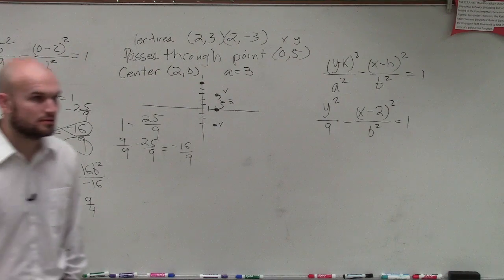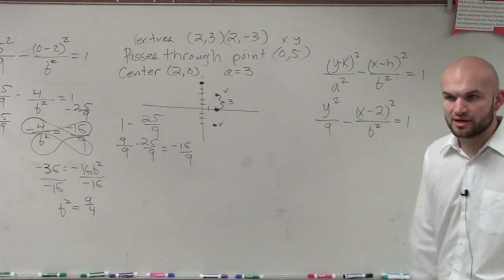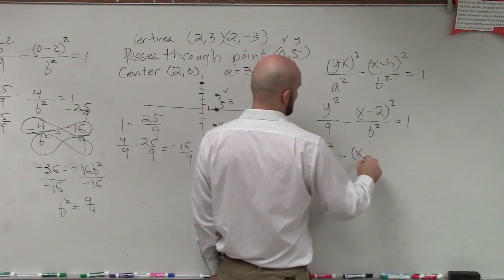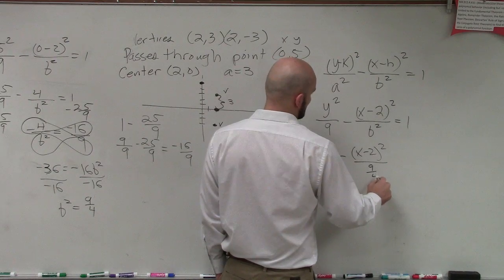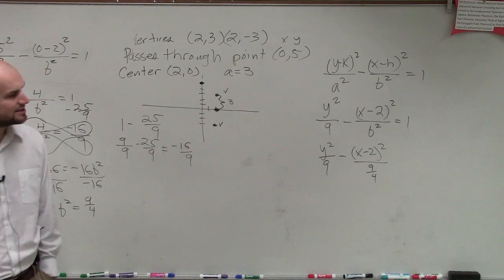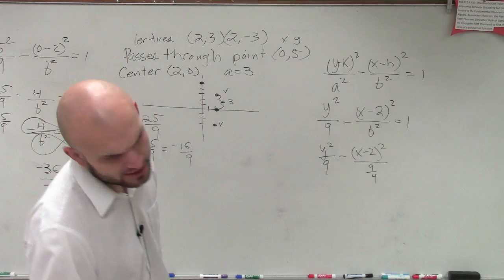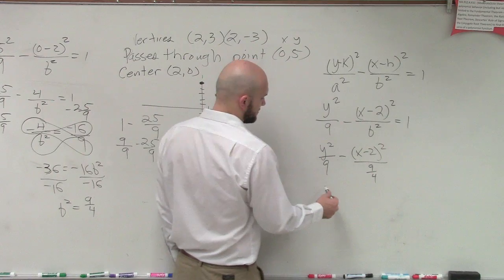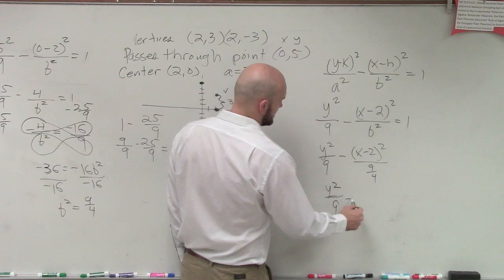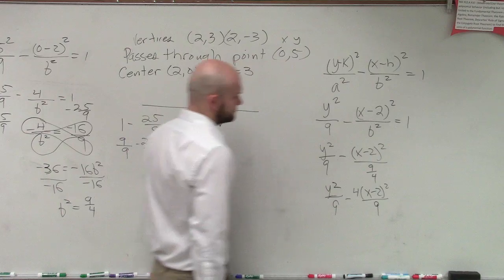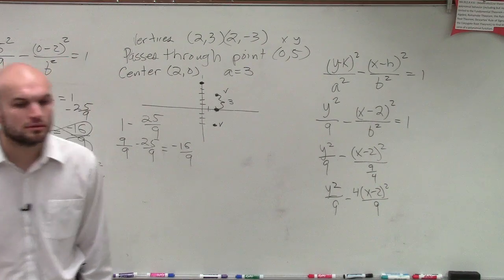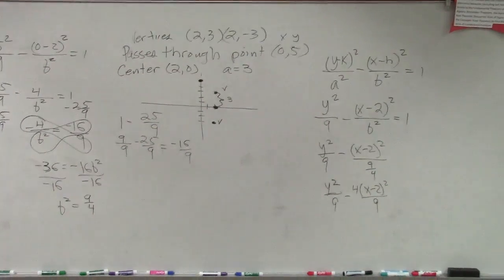So now they're asking us what is our equation. What is going to be our equation for this? Well, now we know what b squared is. And that's all we really needed to figure out. So now I know what b squared is. So I'm just going to write y squared divided by 9 minus x minus 2 squared over 9 over 4. Which we could rewrite by multiplying it back up there, instead of dividing by a fraction, we could go ahead and rewrite it as y squared over 9 minus 4 times x minus 2 squared over 9. And this is the equation.